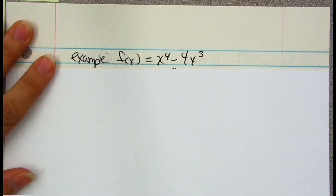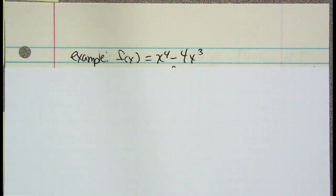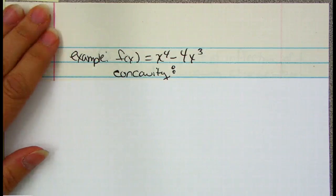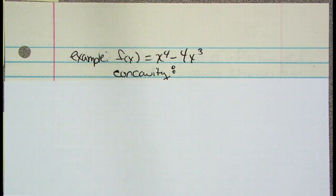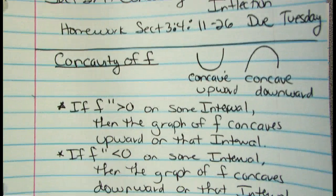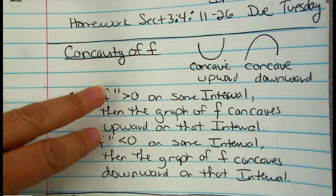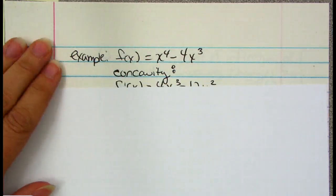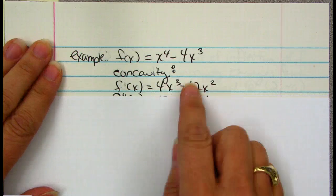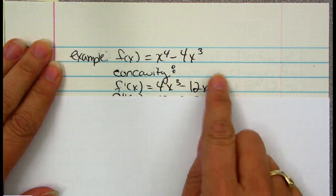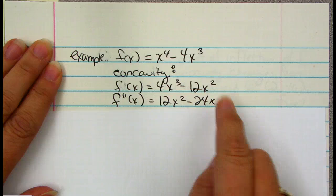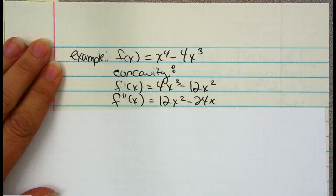Here's our one and only math problem. The original function is x to the fourth minus 4x cubed. The first thing I'm going to do is find concavity, which means I need to get to the second derivative and look at the y outputs of the second derivative. So there's the first derivative: bring down the 4, reduce the power, bring down the 3, reduce the power. Second derivative: bring down the power 3, bring down the power 2. So my second derivative is 12x squared minus 24x.